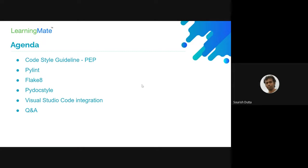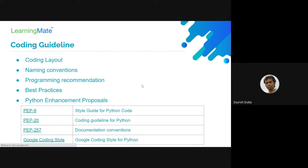Today's topic is looking into the coding guidelines for Python. A coding guideline talks about how we're going to lay out our code — how we do indentation, new lines, and how we structure our code in terms of where we put classes, constructors, constants, methods, and how we arrange our imports.